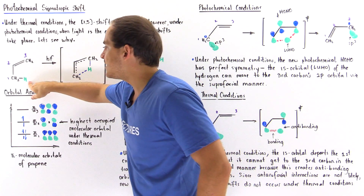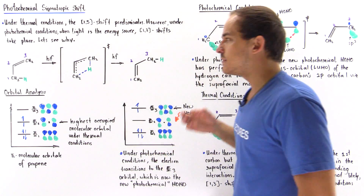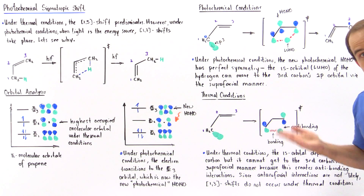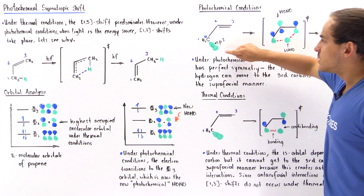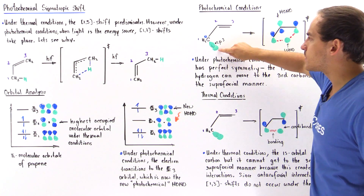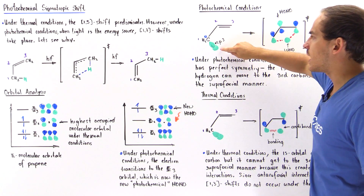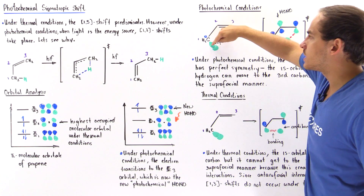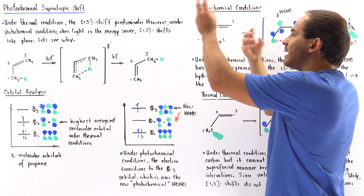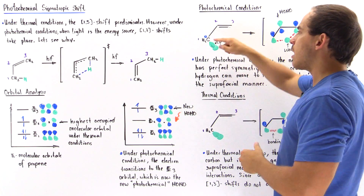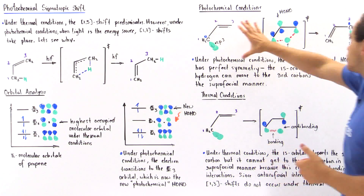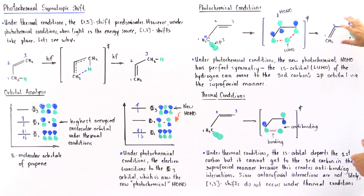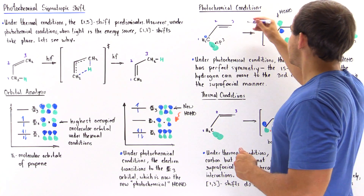This H atom is bonded to carbon via a sigma bond — more specifically an SP3 hybridized bond. So we have the 1s orbital of our H atom and the p orbital of the carbon overlapping to form our SP3 hybridized bond. As soon as the reaction begins to take place under photochemical conditions, when we add light into our mixture, we see that the 1s orbital begins to move away from this carbon and begins to move towards the third carbon.